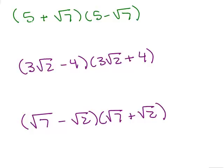For the first one, notice this is in the form (a + b)(a − b). Using the FOIL method, the outer and inner terms are opposites and cancel. So I end up with just 5 times 5, which is 25, minus square root of 7 times square root of 7. The middle terms — negative 5 square root of 7 and positive 5 square root of 7 — cancel. This ends up being 18. When you multiply 5 plus square root of 7 times 5 minus square root of 7, you get a rational number: 18.